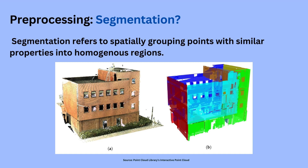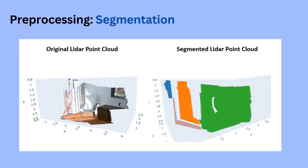Segmentation refers to spatially grouping points with similar properties into homogeneous regions. But why is segmentation important for preprocessing point cloud data? Unlike our human ability to deduce patterns in data and make different observations, sensors lack the ability to mimic our human ability to group sets of elements by grouping objects that are formed by data points that share a pattern.